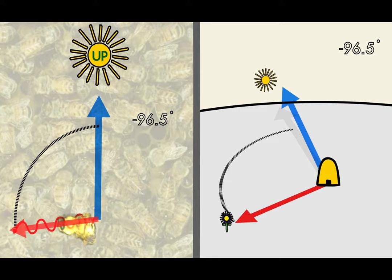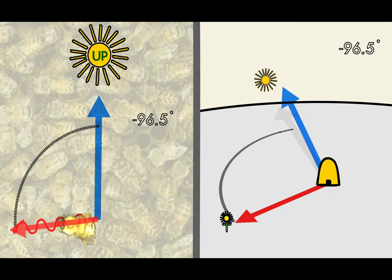A bee angling its dance towards the ground will let others know to fly directly away from the sun.